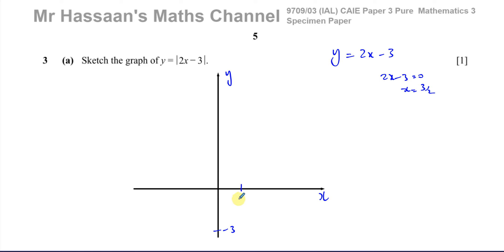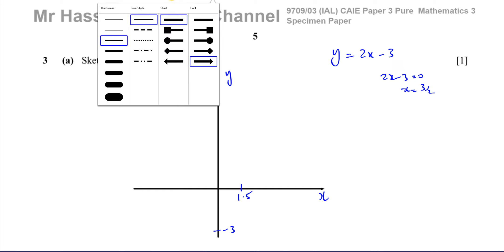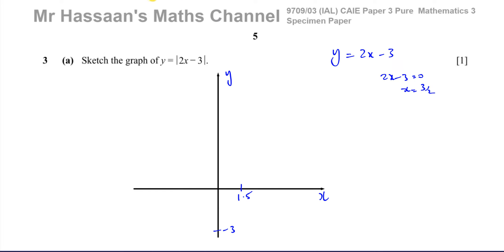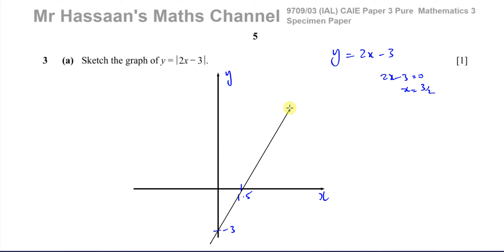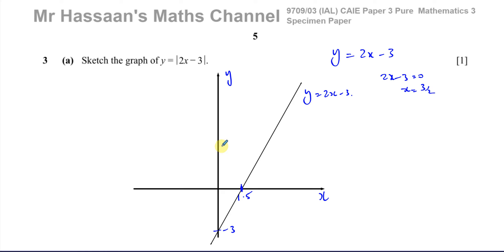So the normal graph goes through those two points. Without the modulus sign you'd draw it as a straight line — that's the graph of y equals 2x minus 3. But it has a modulus sign, so the values below the x-axis will become positive. For example, if I put x equals 0 in, I get y equals the modulus of negative 3, which is 3. So when x is 0, y is going to be positive 3.